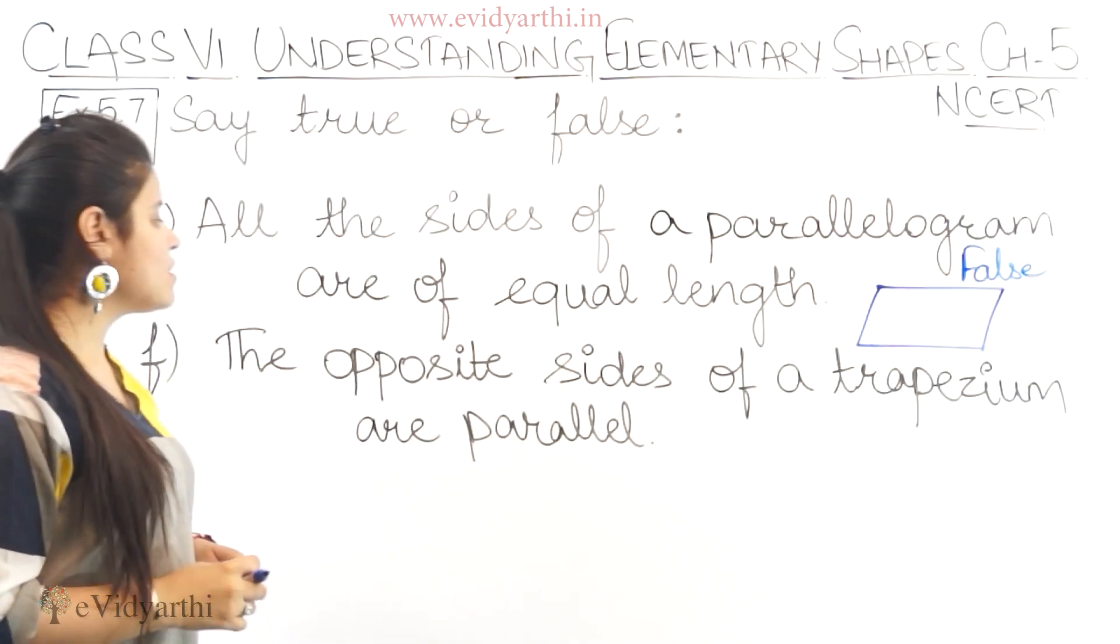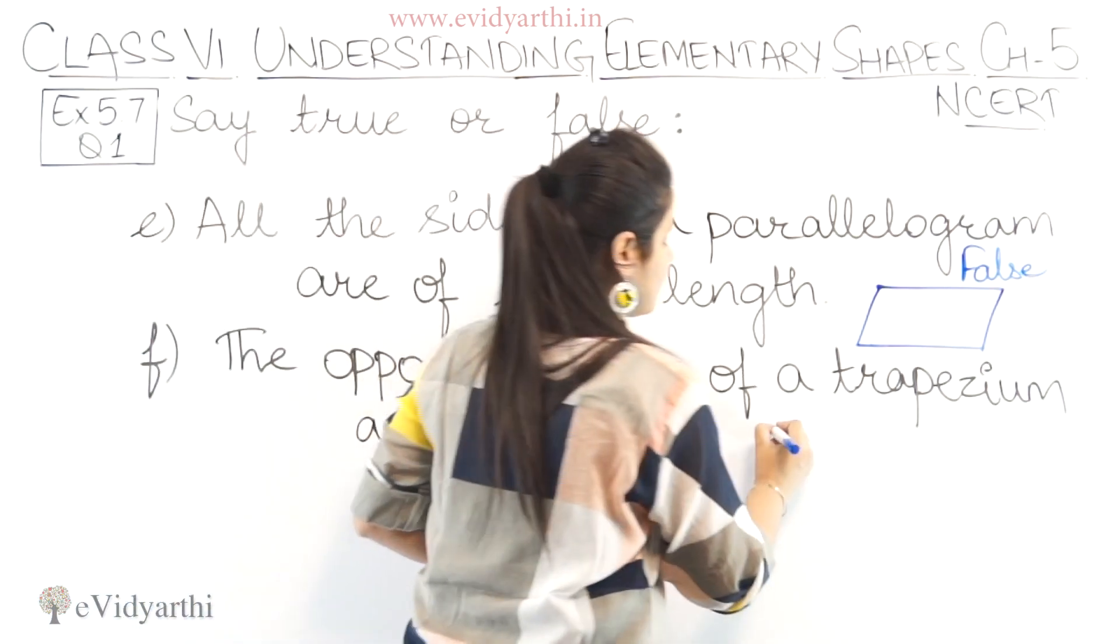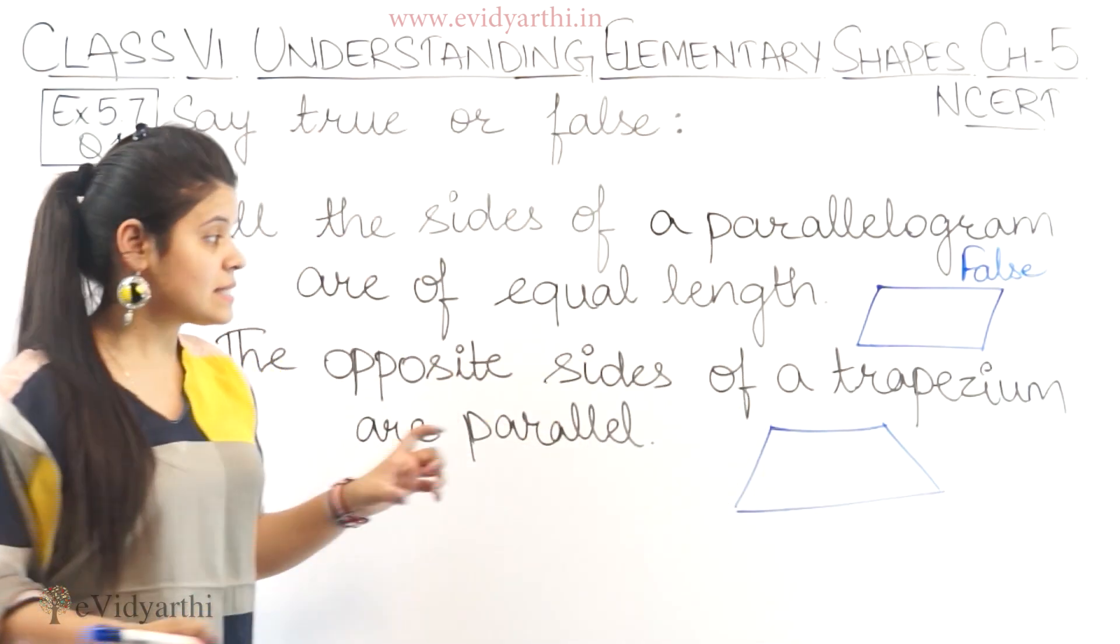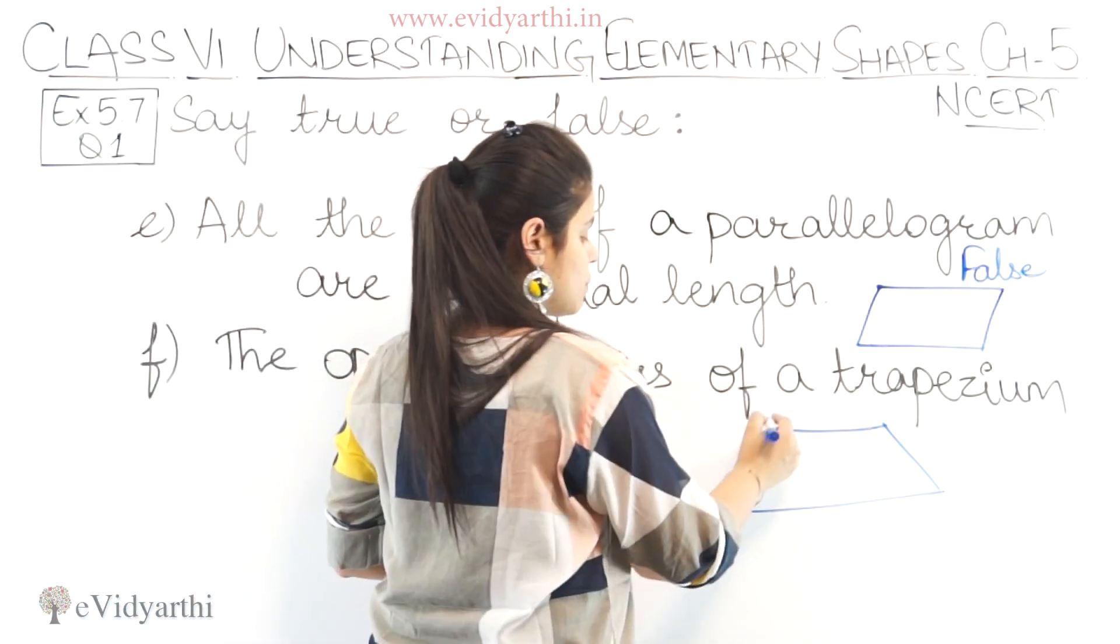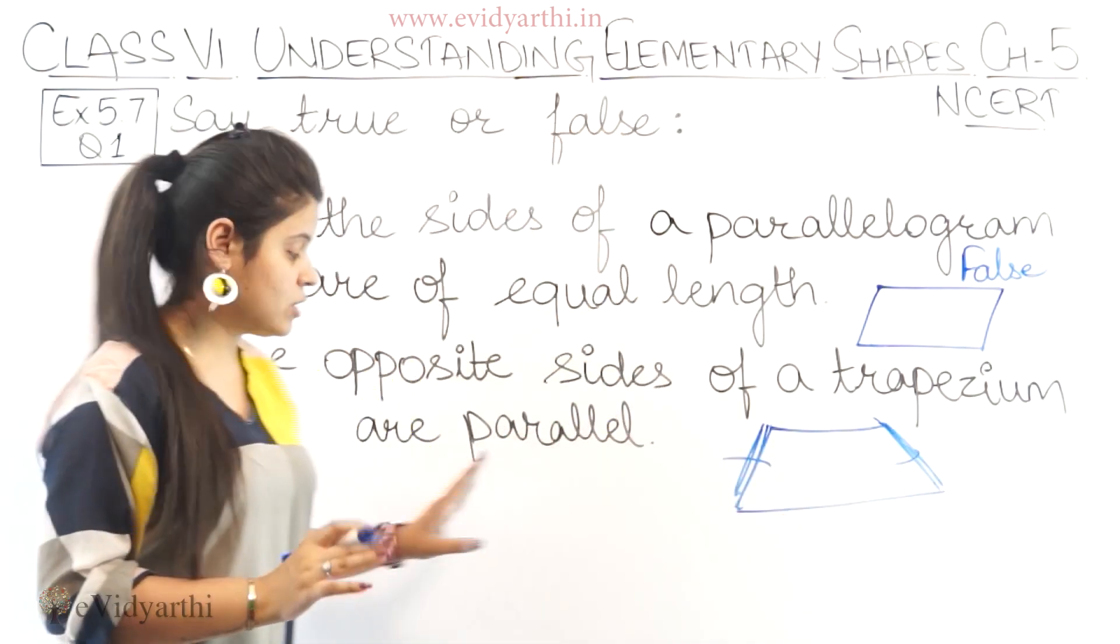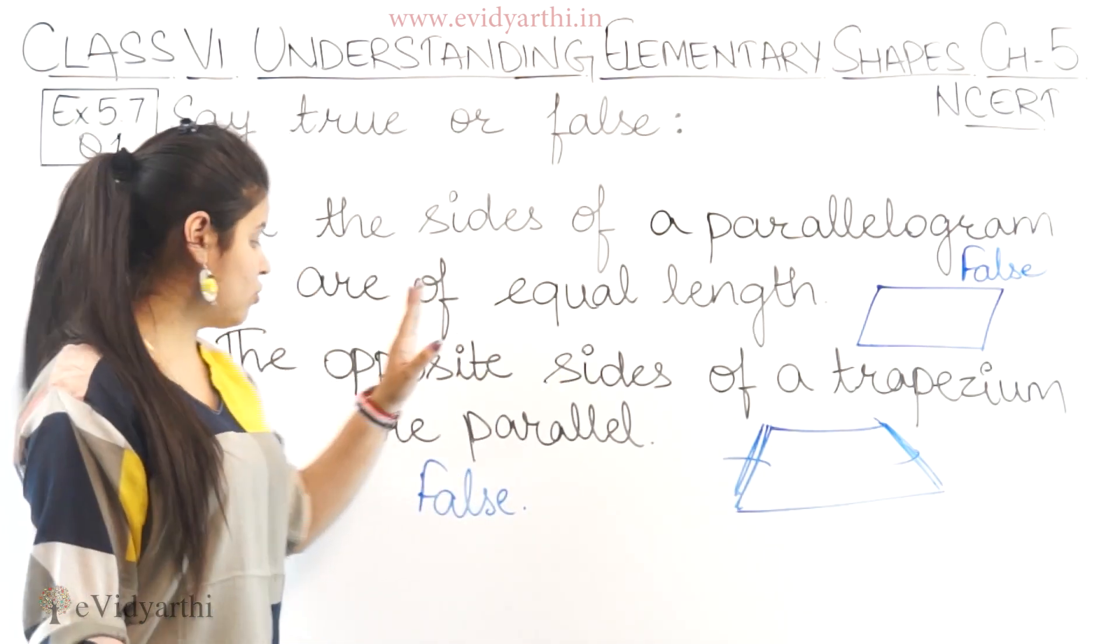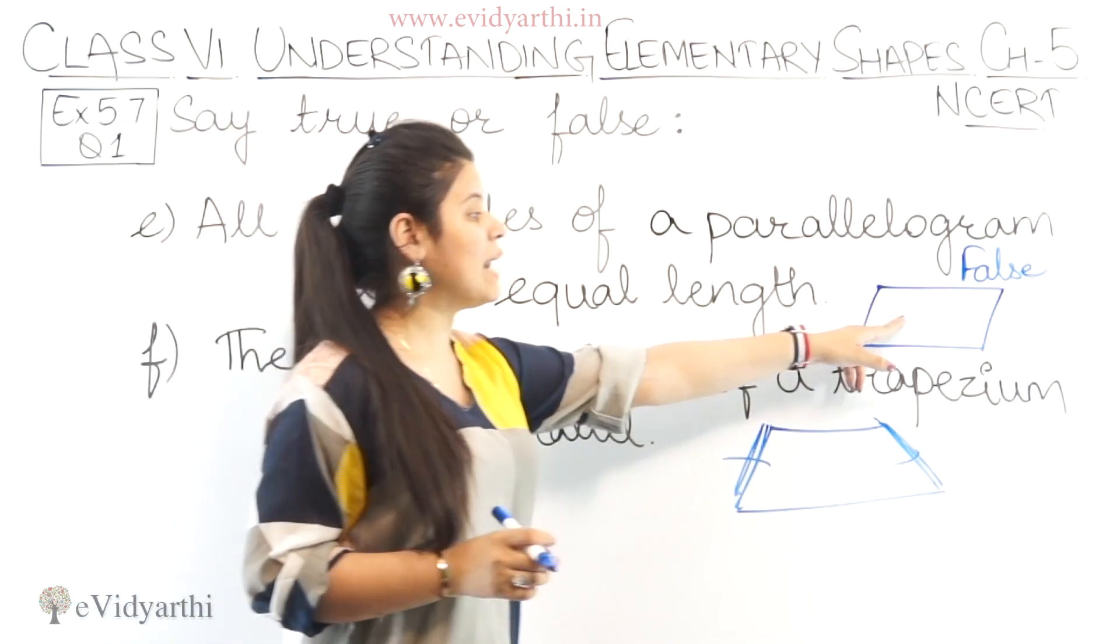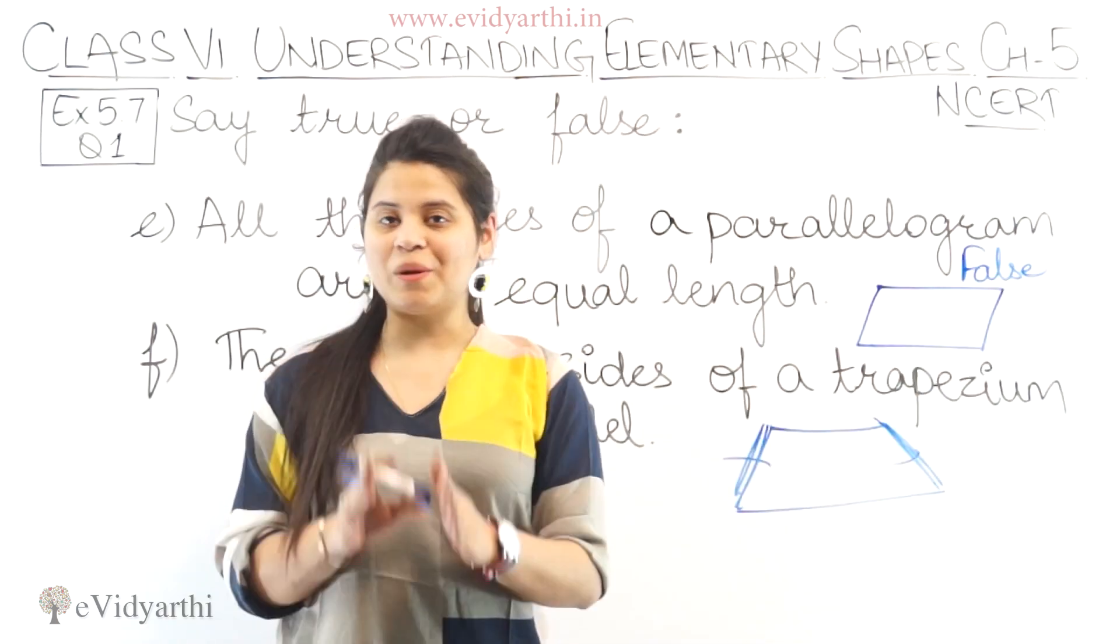Then the last one we have is the opposite sides of a trapezium are parallel. Trapezium ki jo opposite sides hoti hai, woh parallel hai. Yaha pe sirf opposite sides mention nahi kiya. So this will also be false. Because saari opposite sides, these are not parallel. Yehi cheez agar parallelogram ke liye given hoti, that the opposite sides of a parallelogram are parallel, toh woh true hoti, because parallelogram ke opposite sides parallel hoti hai. But that is not in the case of trapezium.